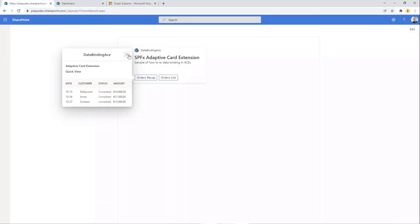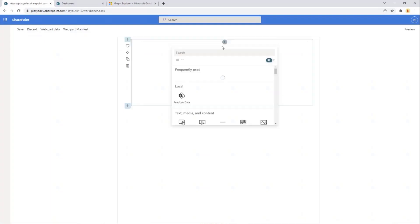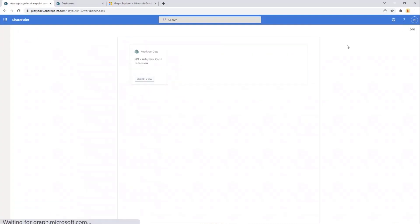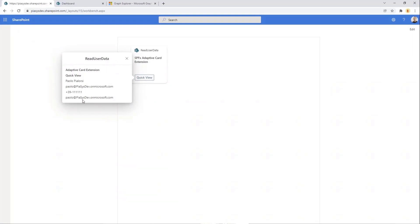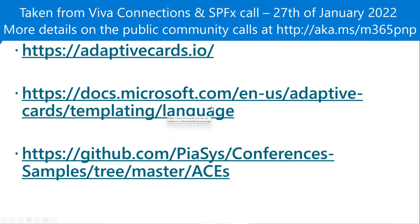Let me show the output - I'll edit this page, remove the old card, and add my new 'Read User Data' preview. As you can see, in the quick view the data is coming out from the JSON object. For reference: the adaptivecards.io site has the whole adaptive card syntax, a second link covers all the functions and keywords used in data binding, and the last link is where you can find all the samples I'm sharing through these short demos.